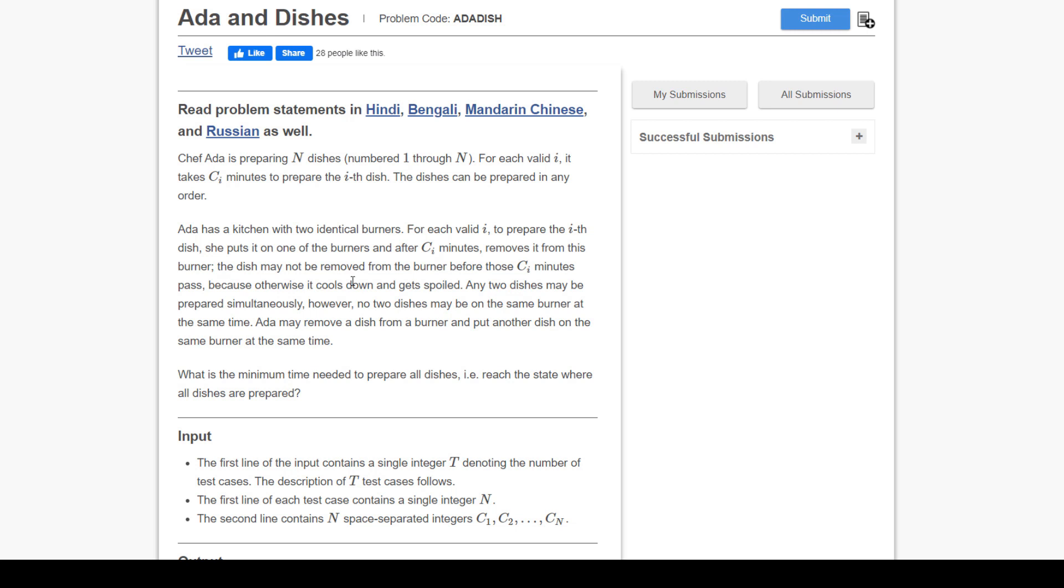Ada has a kitchen with two identical burners. For each valid i, to prepare the ith dish, she puts it on one of the burners, and after Ci minutes removes it. The dish may not be removed before those Ci minutes pass. If the dish takes 2 minutes, you cannot remove it before two minutes—exactly after two minutes. Any two dishes may be prepared simultaneously since there are two burners.